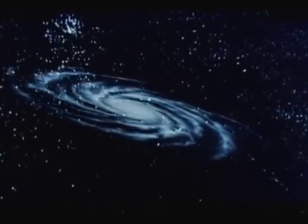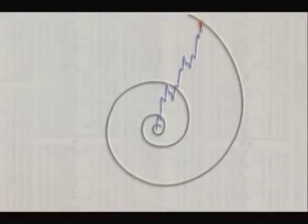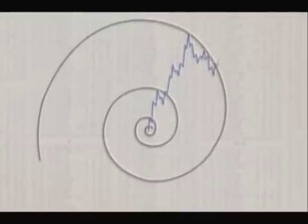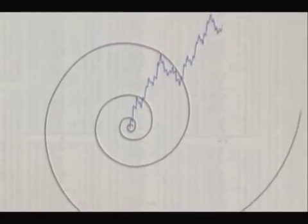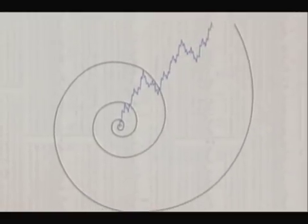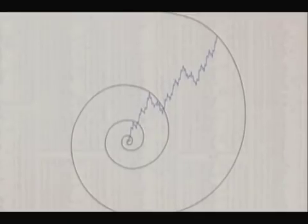So how do these spirals connect to socionomics? The idealized depiction of the stock market's progress can be seen as a spiral. The top of each successive wave of one higher degree serves as a touchpoint for the exponential expansion, and pretty soon it begins to look like the pattern of a hurricane or galaxy.